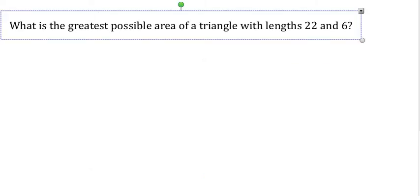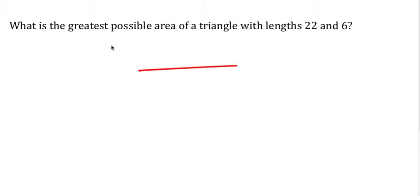Let's take a look at the next one. What is the greatest possible area of a triangle with lengths of 22 and 6? So 22 and 6. Give me a big 22 and a short 6.